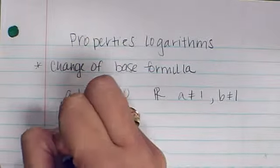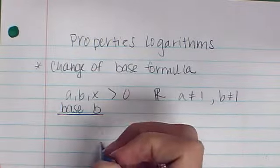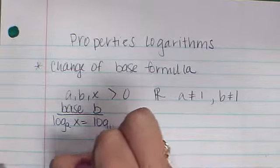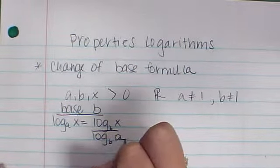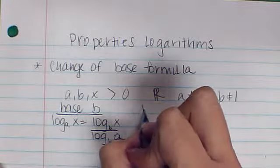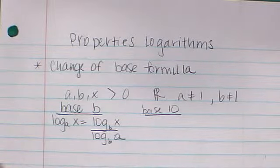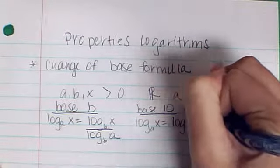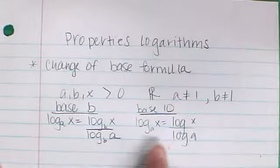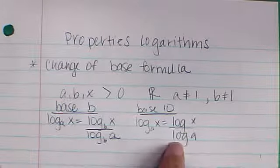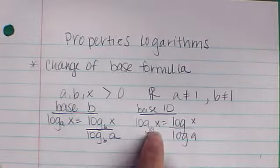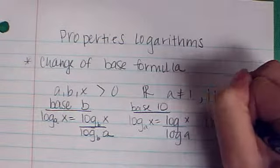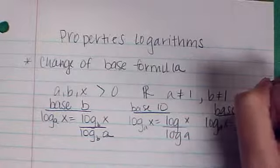If you want to go to a base of b, then the log base a of x equals the log base b of x over the log base b of a. If you wanted to go to a base of 10, the log base a of x equals the log of x over the log of a. The big number goes on top, the little number goes on bottom. And finally, if you wanted to change to base e, so you could use the natural log, then the log base a of x would be the natural log of x over the natural log of a.